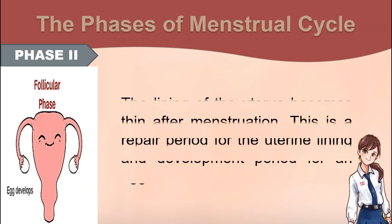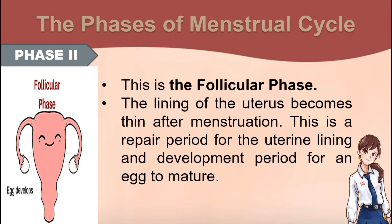Phase 2 – This is the follicular phase. The lining of the uterus becomes thin after menstruation. This is a repair period for the uterine lining and a development period for an egg to mature.